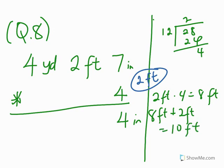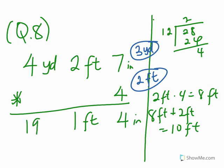Then you check the next relationship: yards and feet. How many yards can you get from 10 feet? One yard is 3 feet, so how many 3s can you get from 10? That is 10 divided by 3, which is 3 remainder 1. The remainder is in feet, so that's 1 foot remaining. We carved out 3 yards — the integer part is the yards, and the remainder is the feet. Then 4 yards times 4 is 16 yards, plus 3 yards gives us 19 yards. So our answer becomes 19 yards, 1 foot, 4 inches.